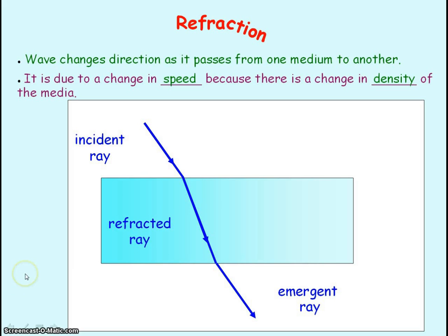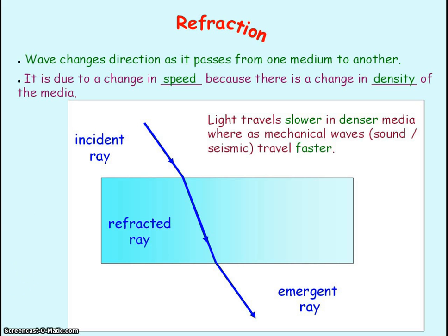Light travels slower in a denser medium. But mechanical waves — for example, sound — travel faster in a denser medium.